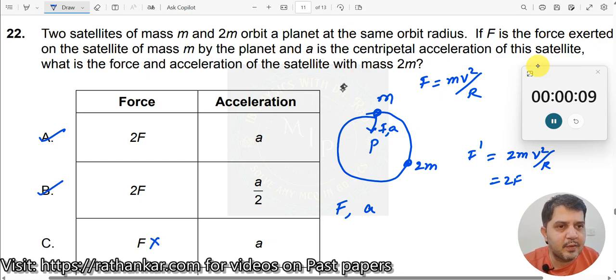Then, what about the acceleration? Acceleration is always V squared by R for both satellites. So the answer should be A here. So this is incorrect, correct. Okay?